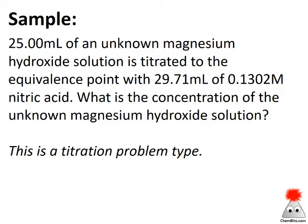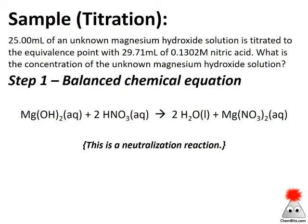Here's another example: 25 milliliters of an unknown magnesium hydroxide solution is titrated to the equivalence point with 29.71 milliliters of 0.1302 molar nitric acid. What is the concentration of the unknown magnesium hydroxide solution? This is a titration problem — titrations are stoichiometry problems. 'Equivalence point' just means we've completely reacted, and titrations are often used to determine concentrations. Step one, balanced chemical equation: magnesium hydroxide reacts with nitric acid to form water and magnesium nitrate, balanced with two nitric acids forming two waters. This is a neutralization reaction.